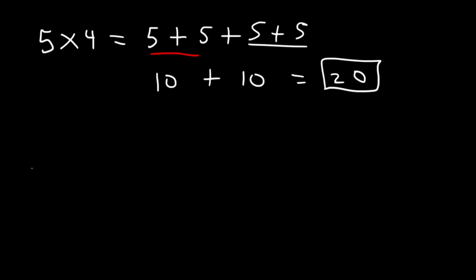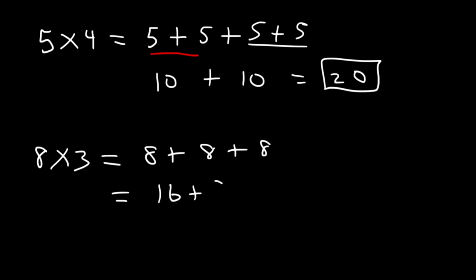So if you want to multiply 8 times 3, basically you're adding 8 three times. 8 plus 8 is 16, and 16 plus 8 is 24.